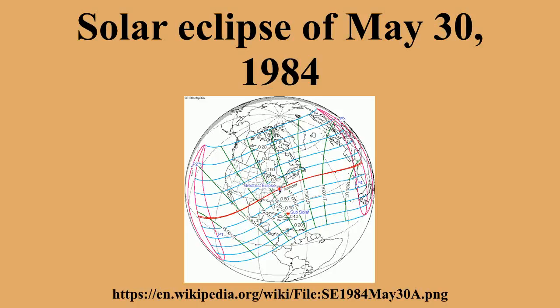Metonic series. The Metonic series repeats eclipses every 19 years, lasting about 5 cycles. Eclipses occur in nearly the same calendar date. In addition, the Octon sub-series repeats one-fifth of that, or every 3.8 years.